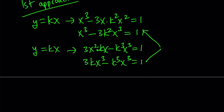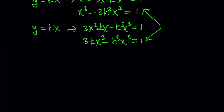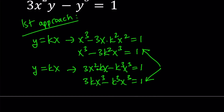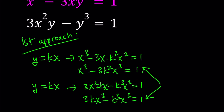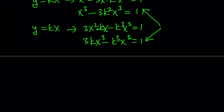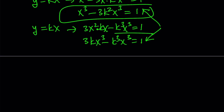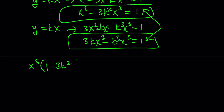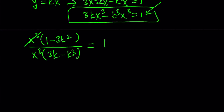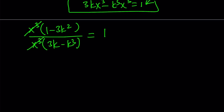So we have a new system, and now we have a common factor. The motivation behind this substitution is that the degree of every term is cubic. So let's factor out x cubed from each equation. This gives us x cubed times (1 minus 3k squared) and x cubed times (3k minus k cubed). Since both sides equal 1, when we divide these equations side by side, x cubed cancels out, and we end up with a cubic equation in a single variable.